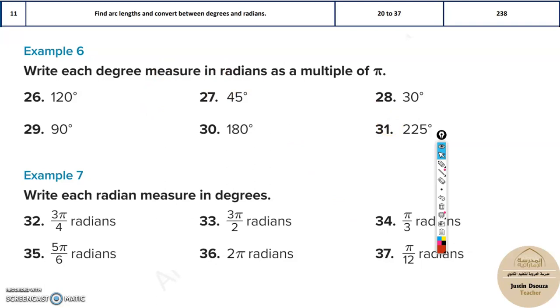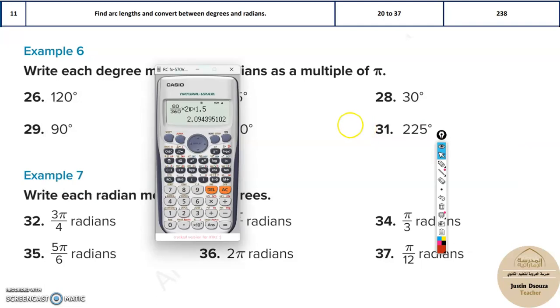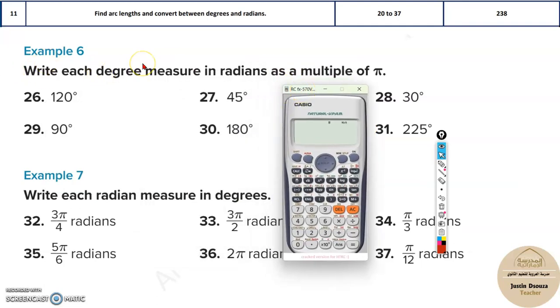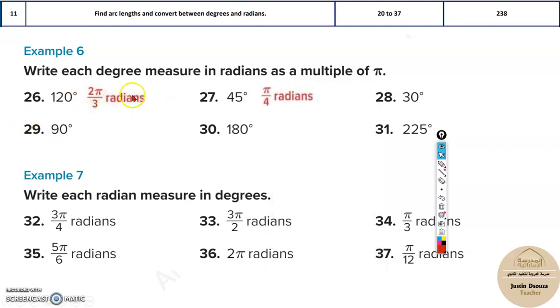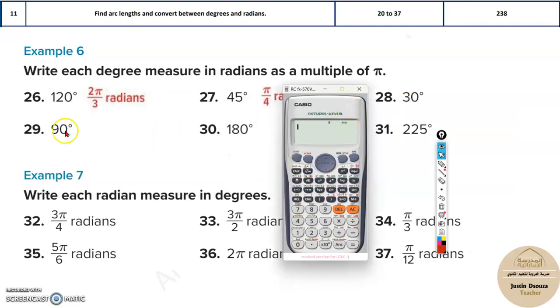There are many methods. One of the easier methods is what I can tell you right now. Understand, whenever you have a degree, you need to convert to radian. The final answer must be in terms of π radians. Now, see over here, the answers will be like this. Now, the conversion unit, you might know 360 degrees is equal to 2π, or 180 degrees is equal to π radians, and then you can convert.